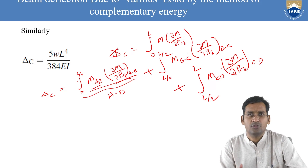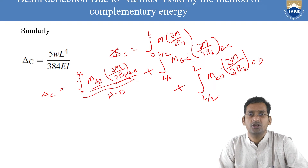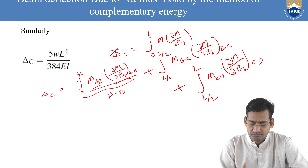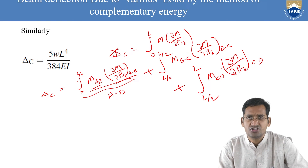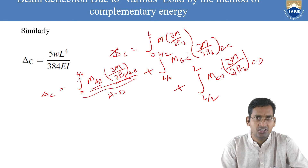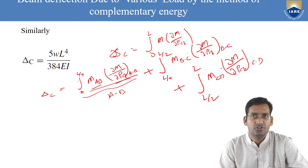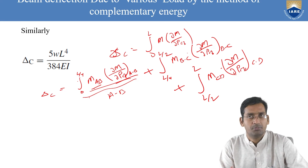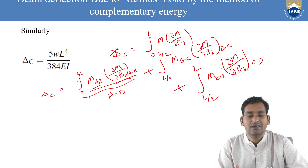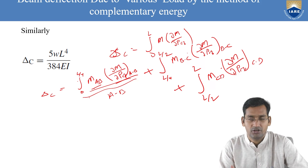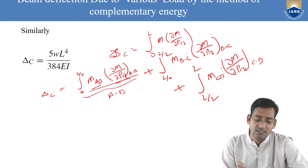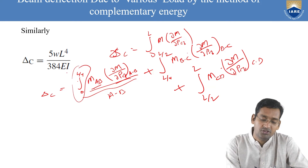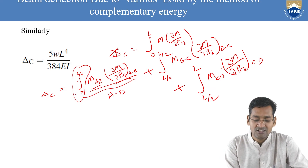To summarize the integration procedure: for each segment, take any constant factors outside the integral; inside, keep only the z-dependent terms (z, z², etc.). Integrate the z terms by the power rule (zⁿ → zⁿ⁺¹/(n+1)), substitute upper and lower limits (upper minus lower), and simplify. Use proper brackets, especially when subtracting the lower limit, to avoid sign errors.